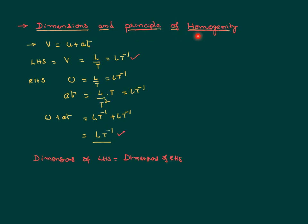So, according to units and dimensions, according to the principle of homogeneity, any physics equation is said to be correct when its dimensional formula on the LHS equals the dimensional formula on the RHS. That principle is called the principle of homogeneity.